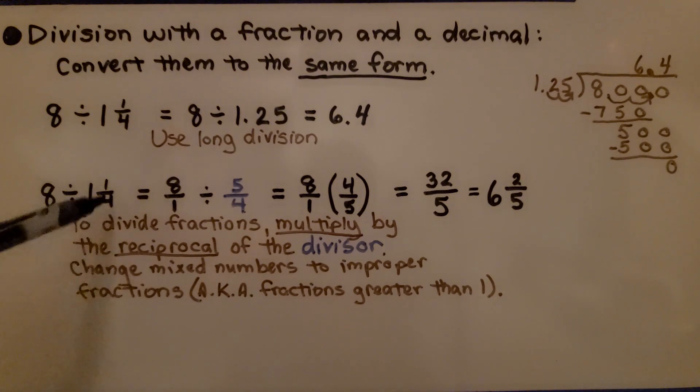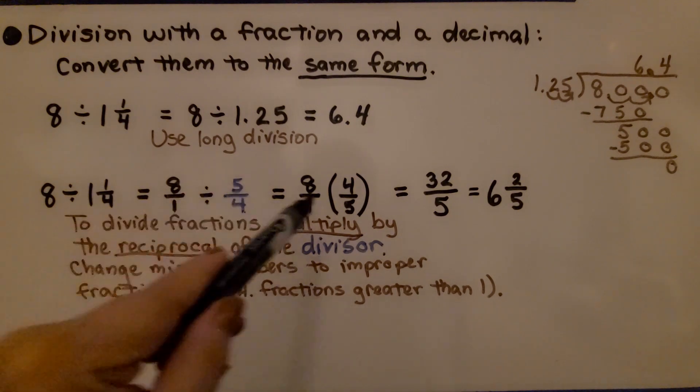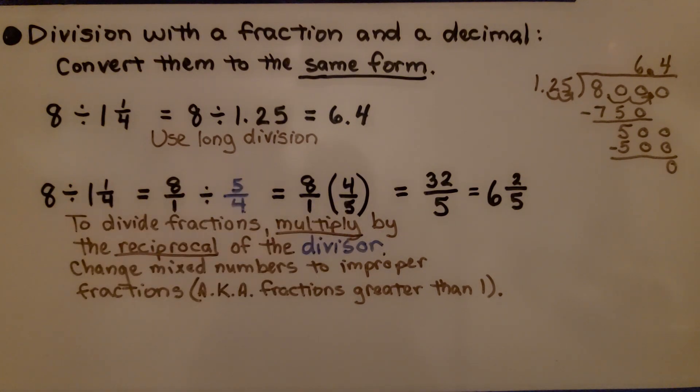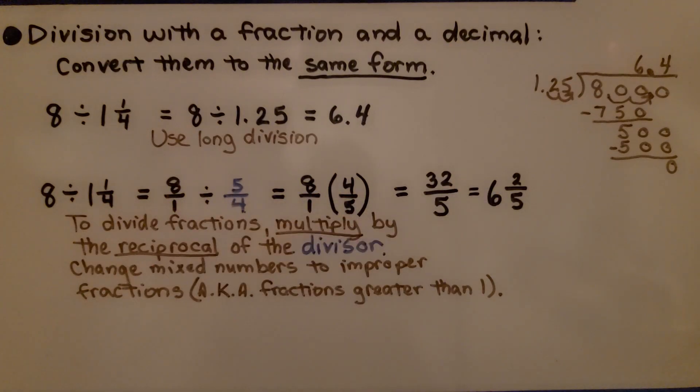We can also divide the fractions by multiplying by the reciprocal of the divisor. We turn this mixed number into a fraction greater than 1, an improper fraction, so it would be 5/4. We do 1 times 4 is 4, and we add the numerator. That's 5. We use that denominator, so we have 5/4. We flip it around to its reciprocal of 4/5, and then we multiply straight across. We get 32/5, which simplifies to 6 and 2/5.